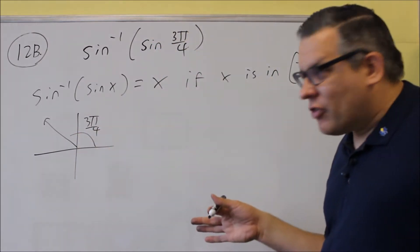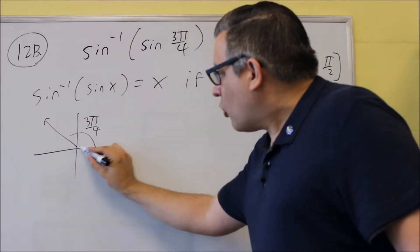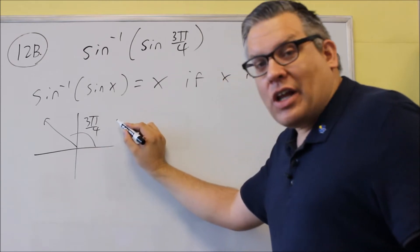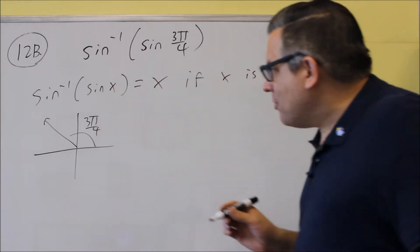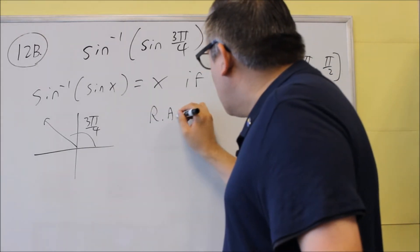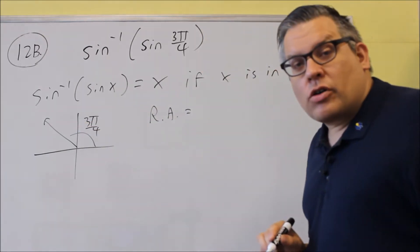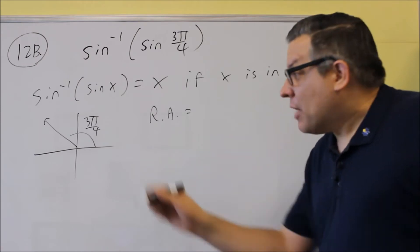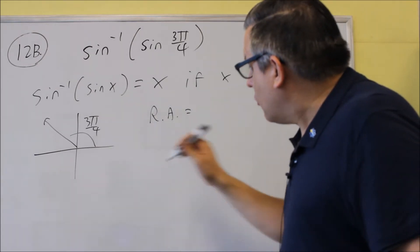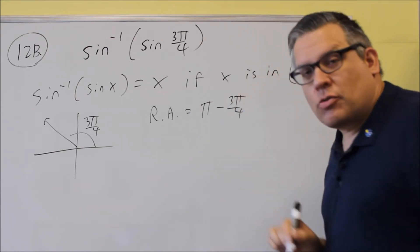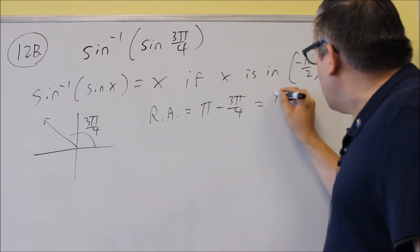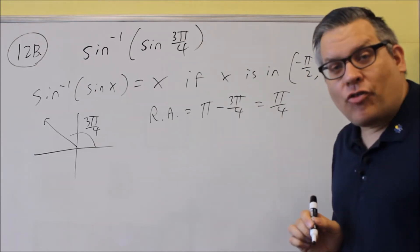We want to find the reference angle. So we want to find the equivalent angle in the first quadrant that has the same value as sine 3π over 4. So the reference angle, because in the second quadrant the formula for it is π minus the angle. So we're going to do π minus 3π over 4, and that gives us π over 4.